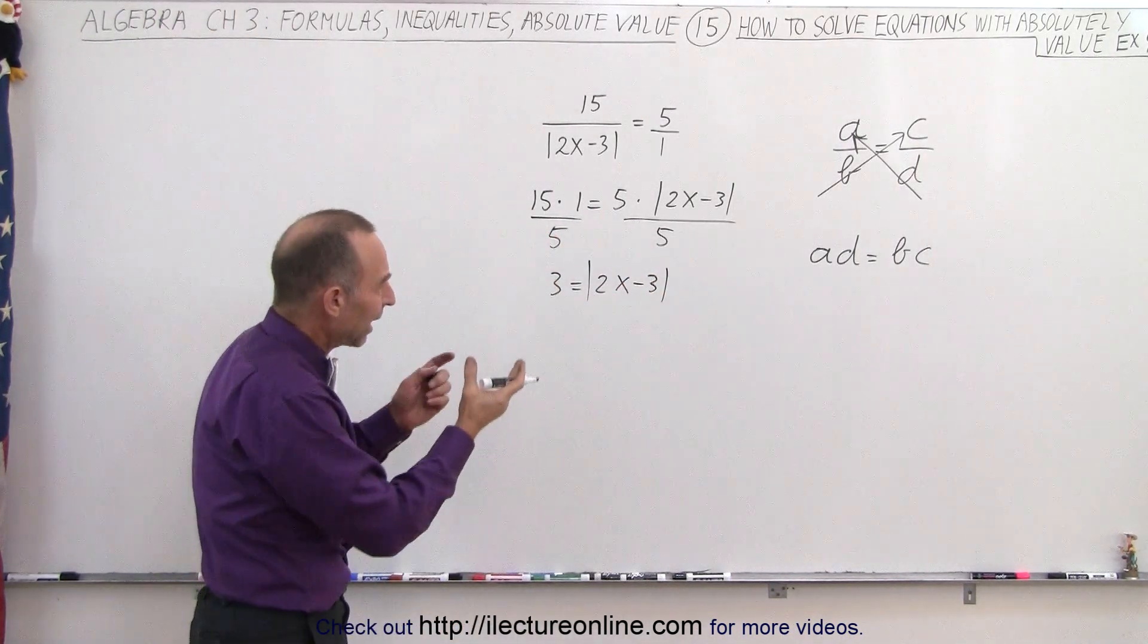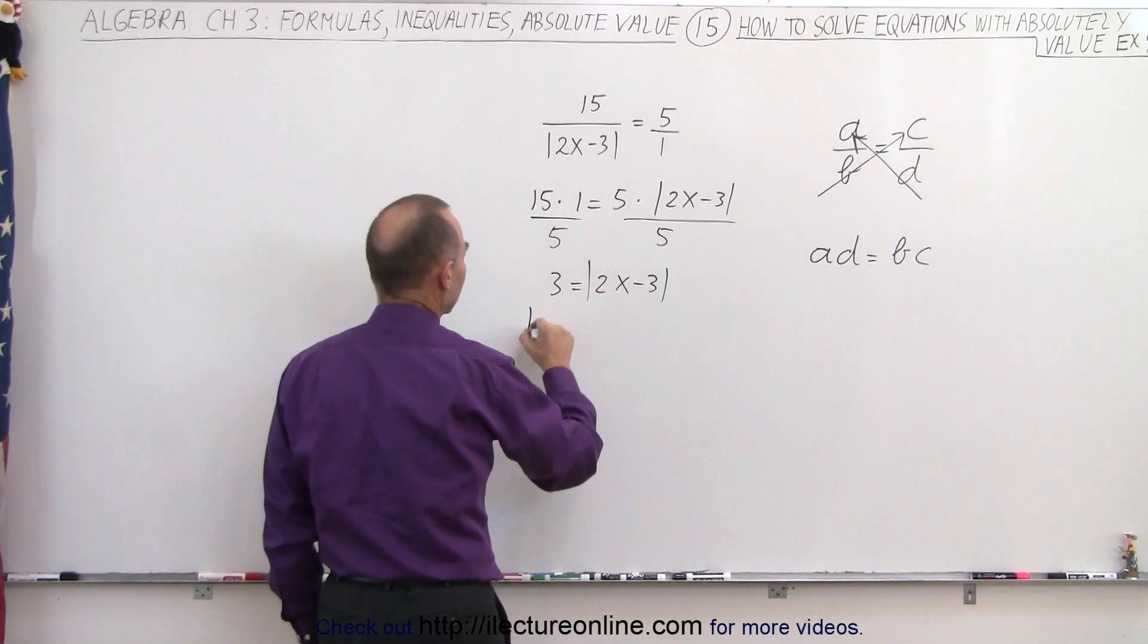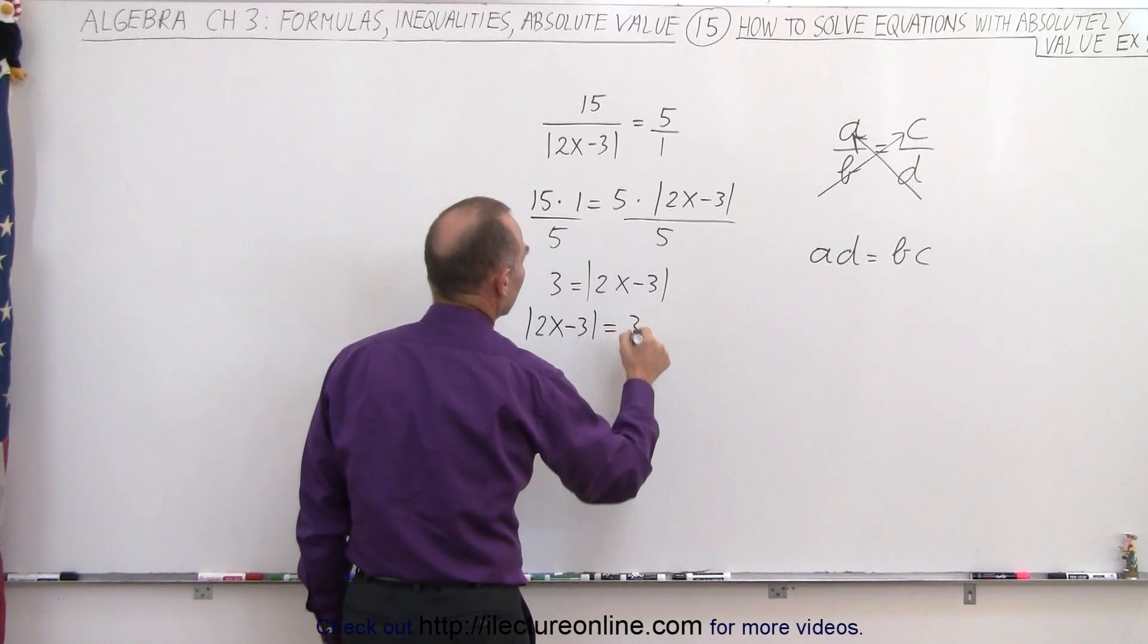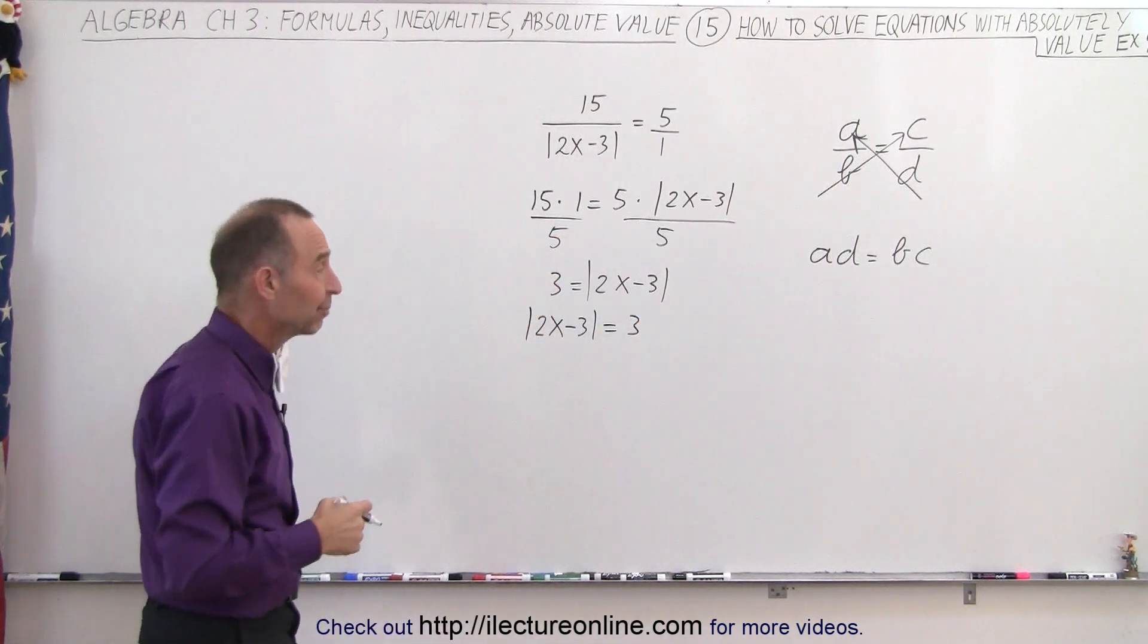And then typically we like to have the absolute value sign on the left side, so we'll write the absolute value of 2x minus 3 is equal to 3, and now we solve that equation just like we have before.